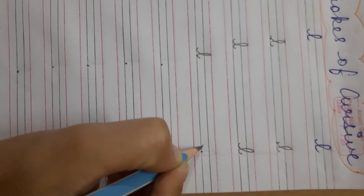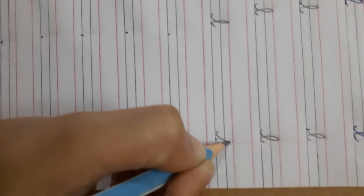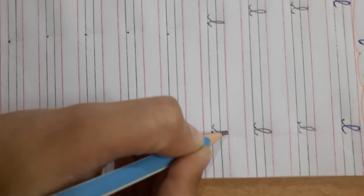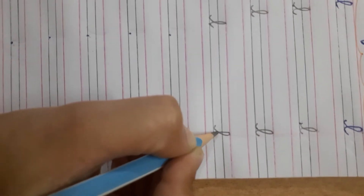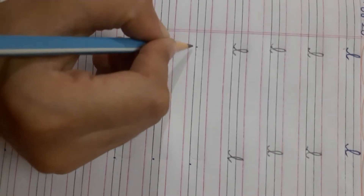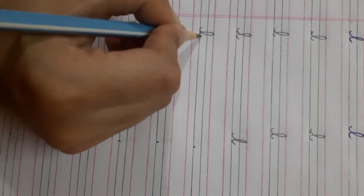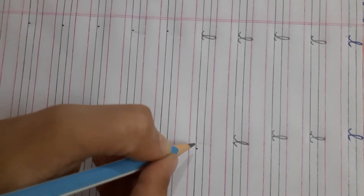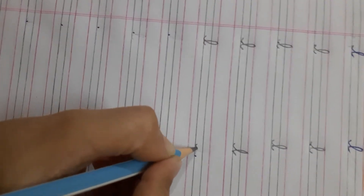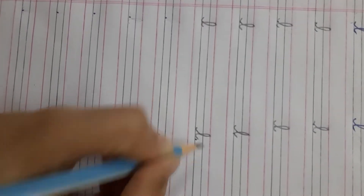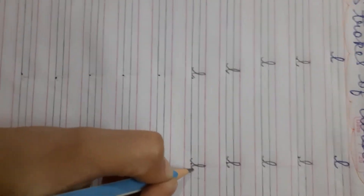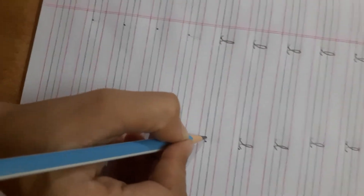Put your pencil on the third line. Make a tail, go up, touch the first line. Again come out with tail. Very good. L. L for lion. And this is cursive.